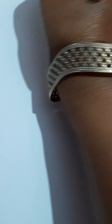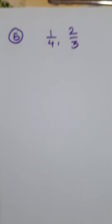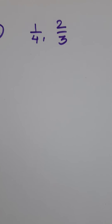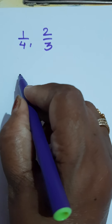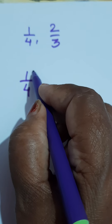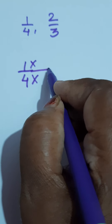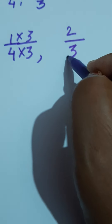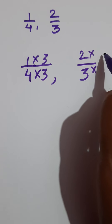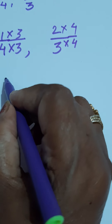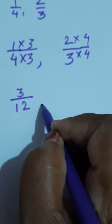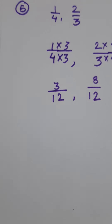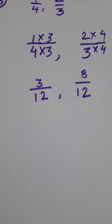Look at the next example: 1 upon 4 and 2 upon 3. Make them like fractions. Here also, the same method. Multiply the first fraction 1 upon 4 by the second denominator, that is 3. Similarly, multiply the second fraction by the first denominator, which is 4. So: 3 ones are 3, 4 threes are 12. Similarly, 2 fours are 8, and 3 fours are 12. Are they like fractions now? Yes, they are like fractions because their denominators are equal.